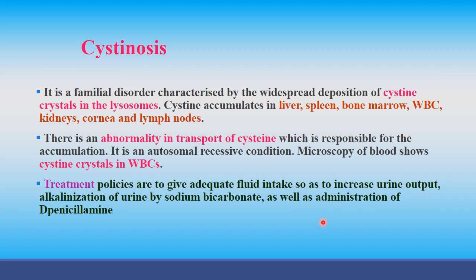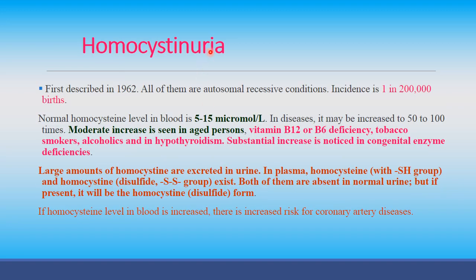Treatment for cystinosis is the same: adequate intake of fluid to increase urine output and alkalization of urine by sodium bicarbonate. Next is homocysteinuria, first discovered in 1962. It is an autosomal recessive condition.